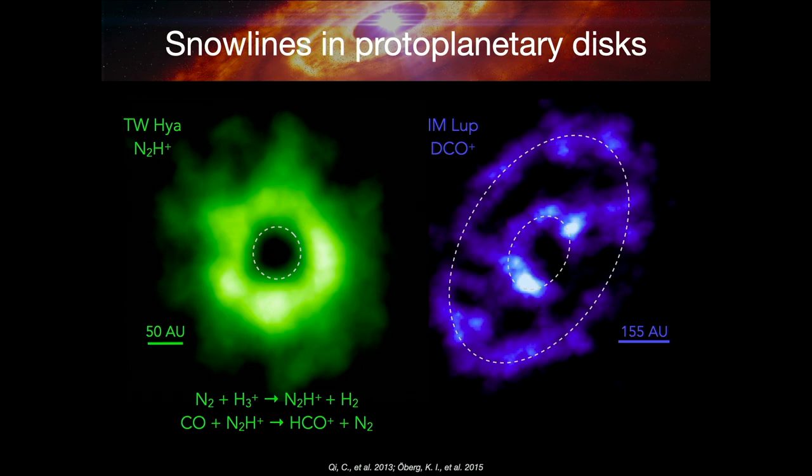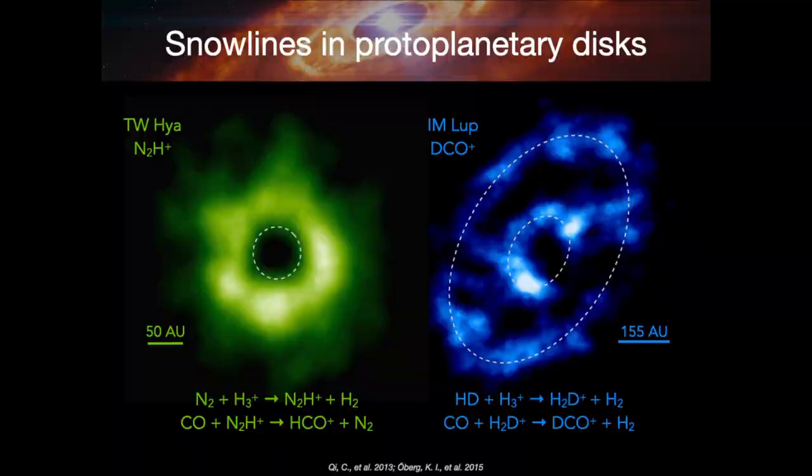Similarly, DCO+ emission in IM Lup sits in two rings. The chemical relationship between DCO+ and the CO snow line also exploits the fact that at low temperatures, deuterium fractionation is enhanced — molecules prefer to host deuterium rather than hydrogen. So DCO+ traces cold CO-rich regions, and its ring structure reveals both the CO snow line and additional compositional structure in the disk midplane.